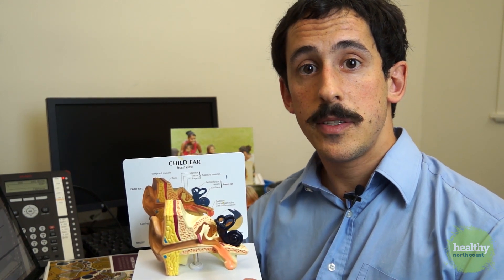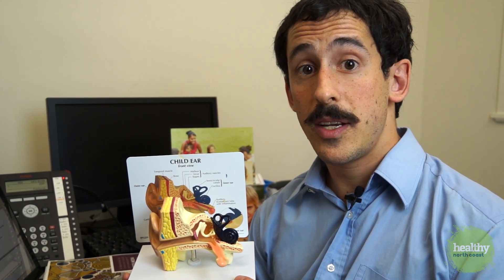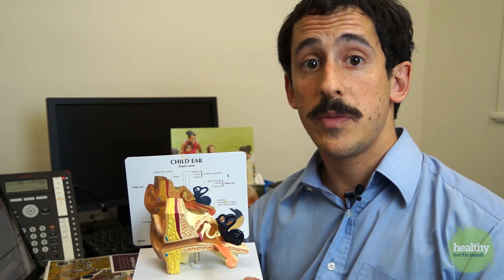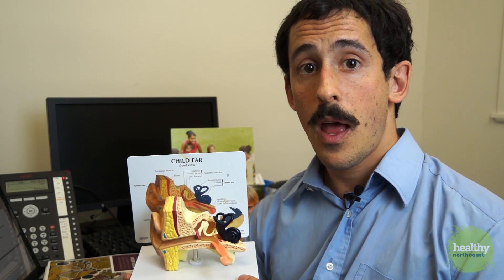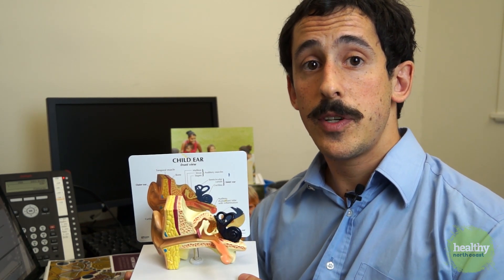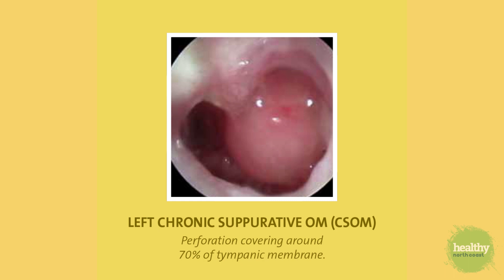Other times the eardrum itself gets infected by those germs, and a child will have an acute otitis media. If a child has many instances of acute otitis media, they can develop a small hole in the eardrum. Remember that this diagnosis is acute otitis media with perforation. CSOM — chronic suppurative otitis media — should only be diagnosed if you know that hole has been there for two weeks or longer.